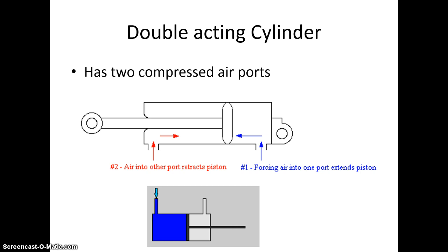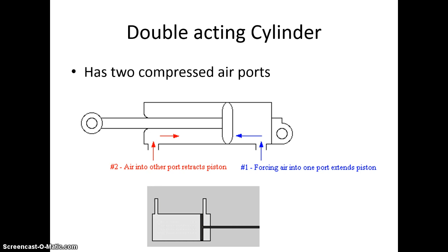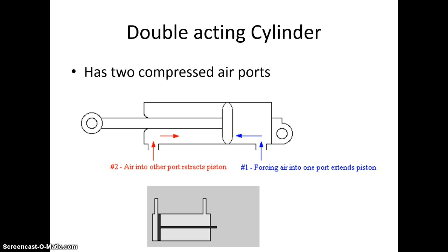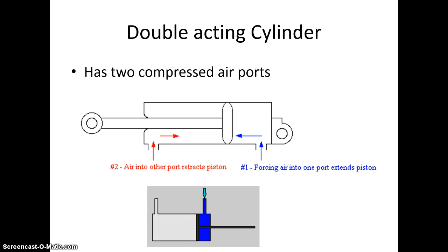The double acting cylinder has two compressed air ports. This allows, via a switch, control over which air pocket the compressed air goes into. As you can see in the diagram below, it pushes in both ways.